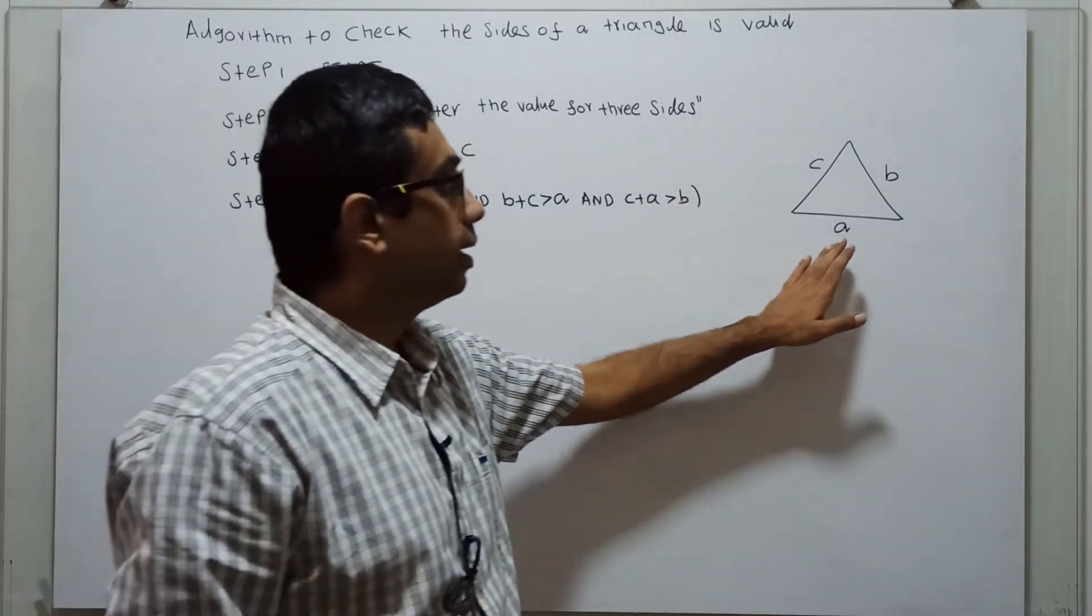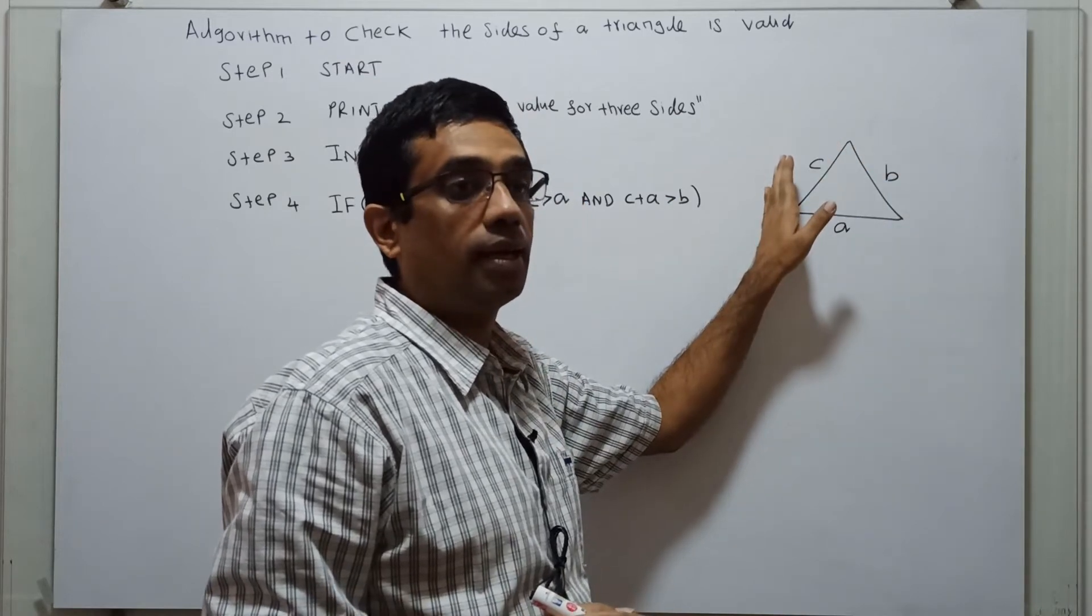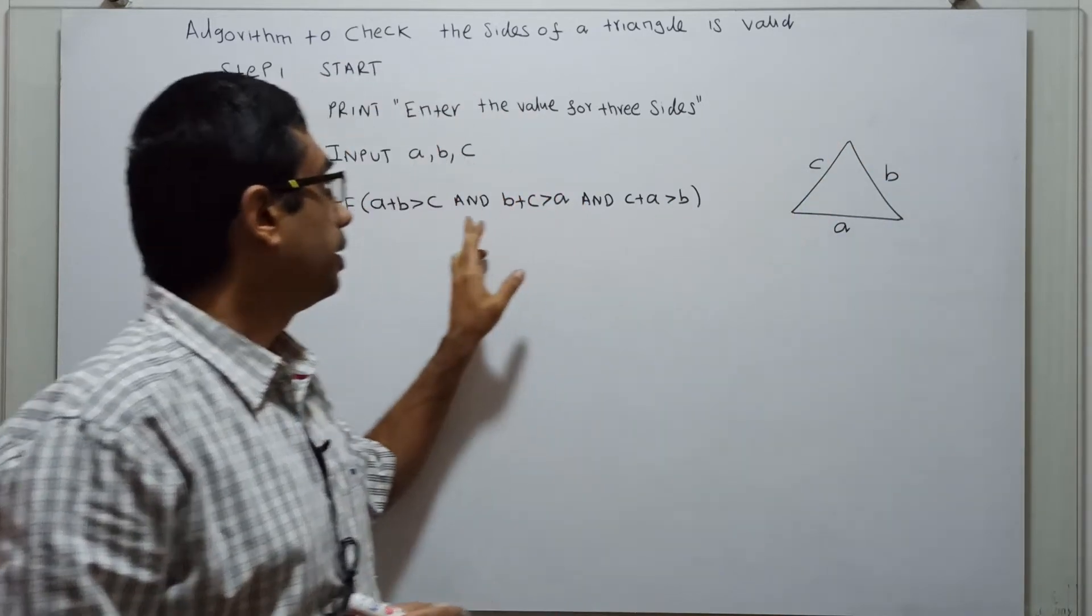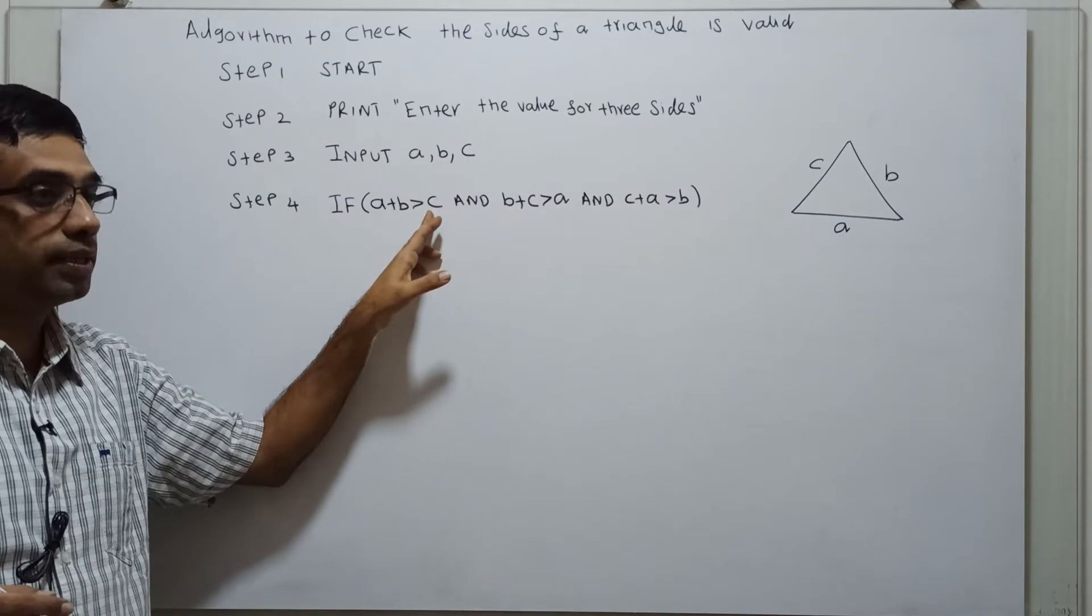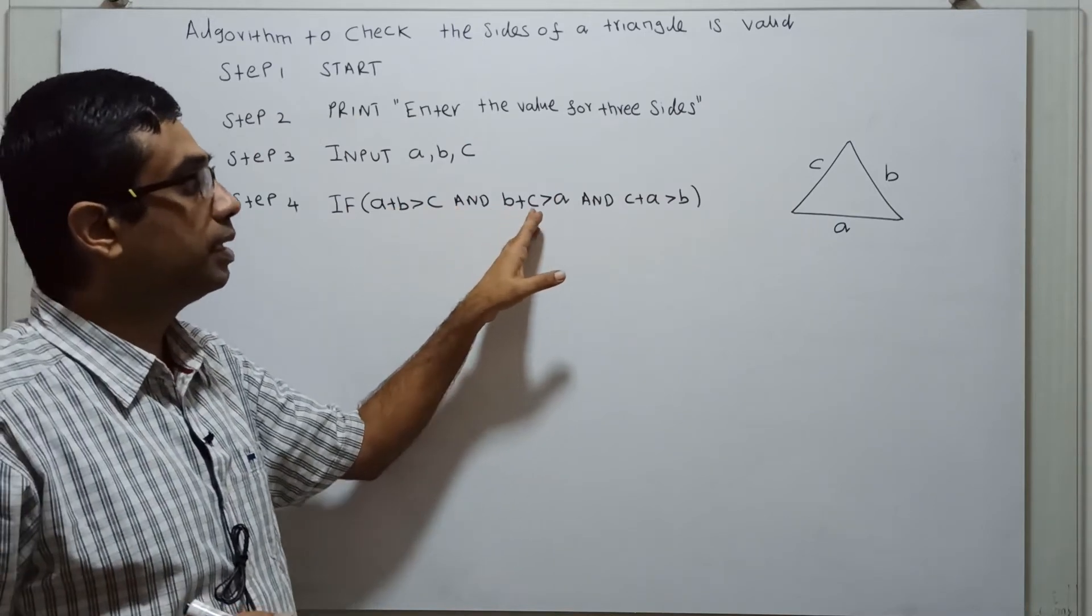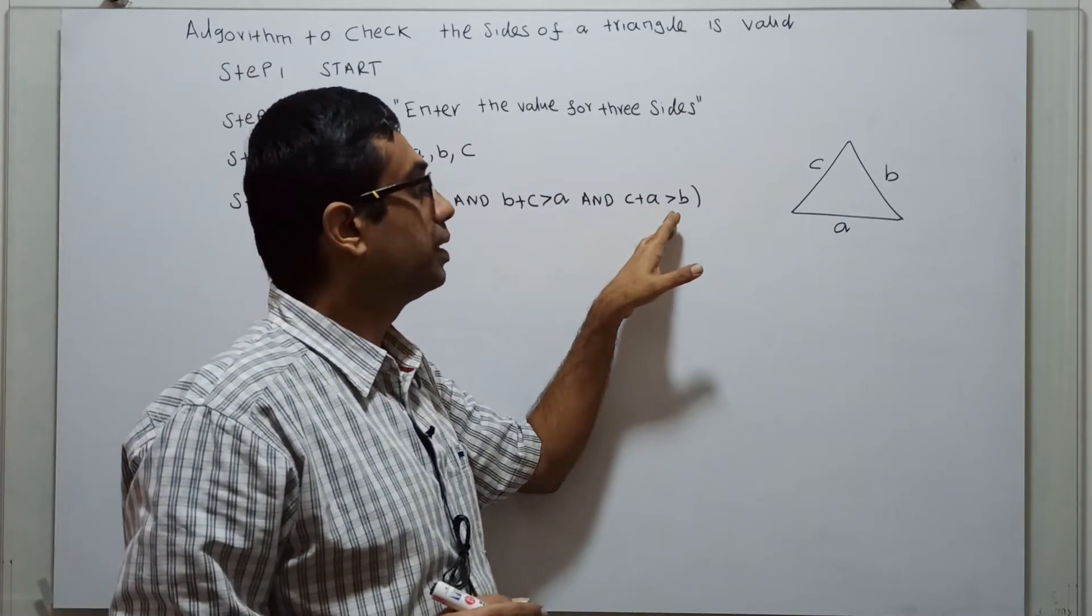When we add two sides, it should be greater than the other side which is left out. A plus B must be greater than C, B plus C greater than A, and C plus A greater than B.